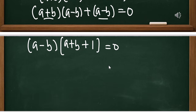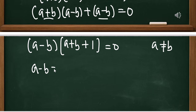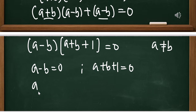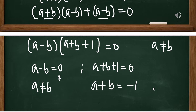We have two factors. Recall from the beginning that A is not equal to B — this is the condition given to us. So A minus B equals 0 would mean A equals B, which is not true. Therefore A minus B is not equal to 0. That means A plus B plus 1 equals 0, so A plus B equals negative 1. I'm going to call this equation 3, and we'll use it very soon.